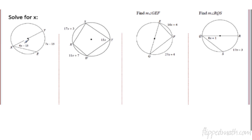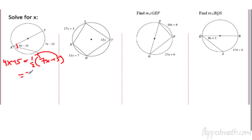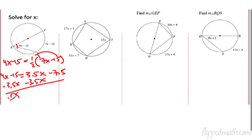Let's crank it up a notch. Algebra now. So 4x minus 15 is going to equal half of the intercepted arc — the angle is half of the measure of the intercepted arc. Can we distribute a half? 4x minus 15 equals 3.5x minus 7.5. I'm going to subtract 3.5x from each side, giving us 0.5x. Add 15 to each side, we get 7.5. Divide both sides, and x equals 15. Done with that one.